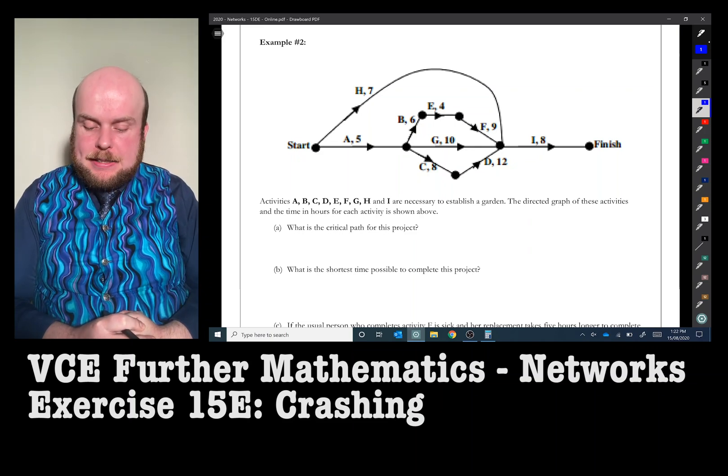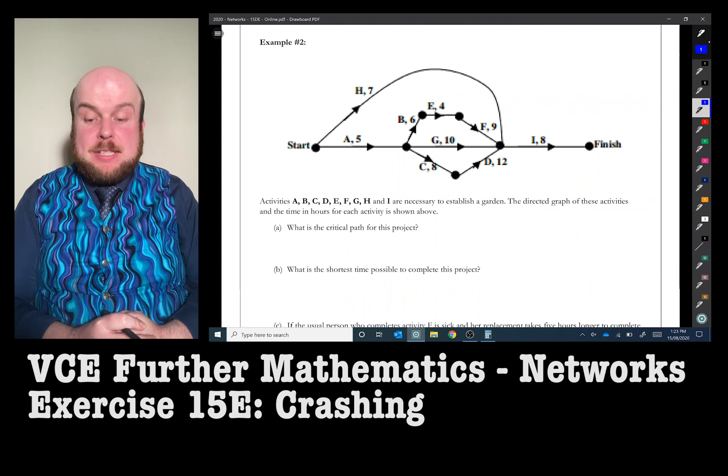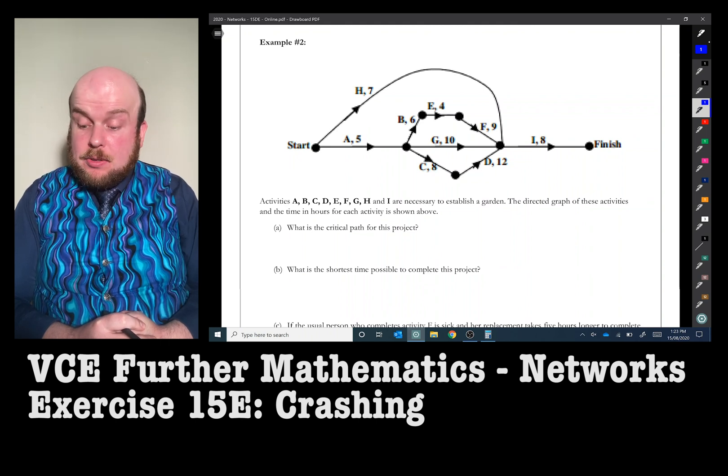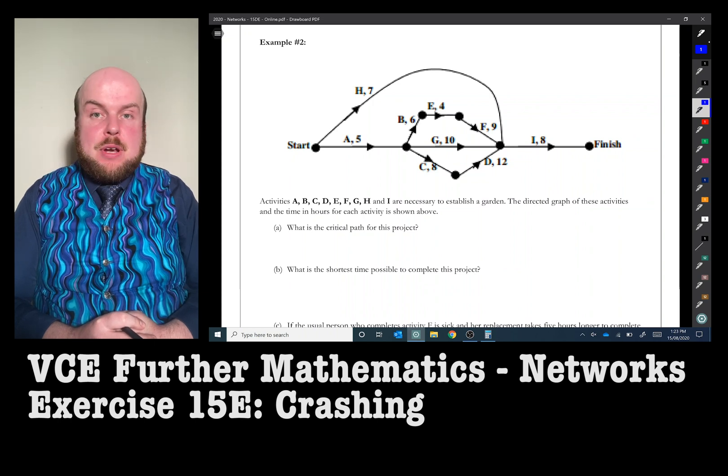Example two. Activities A, B, C, D, E, F, G, H, and I are necessary to establish a garden. The directed graph of these activities and the time in hours for each activity is shown above.